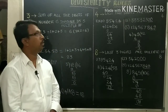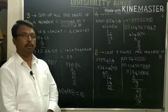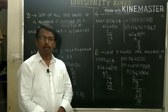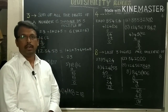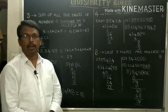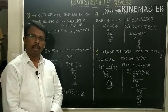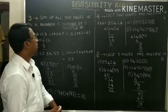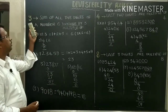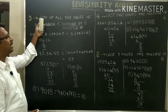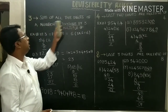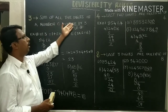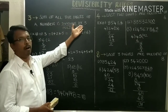Now I would like to continue divisibility rules. Divisibility rules means the rule tells us without doing division we can say whether a number is divisible or not. The rule of 3: the sum of all the digits of a number is divisible by or a multiple of 3.